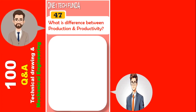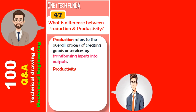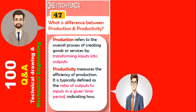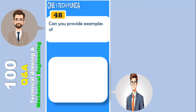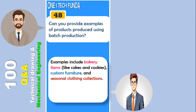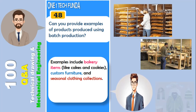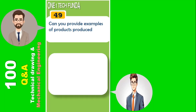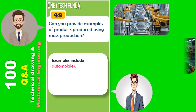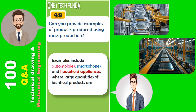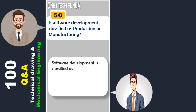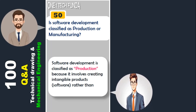What is the difference between production and productivity? Production refers to the overall process of creating goods or services by transforming inputs into outputs. Productivity measures the efficiency of production; it is typically defined as the ratio of outputs to inputs in a given time period, indicating how effectively resources are utilized. Examples of batch production include bakery items like cakes and cookies, custom furniture, and seasonal clothing collections. Examples of mass production include automobiles, smartphones, and household appliances. Software development is classified as production because it involves creating intangible products rather than physical goods.